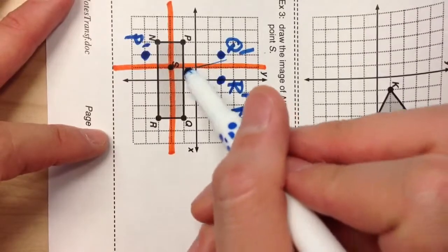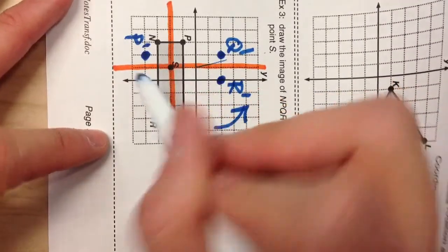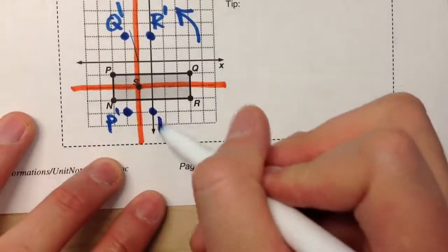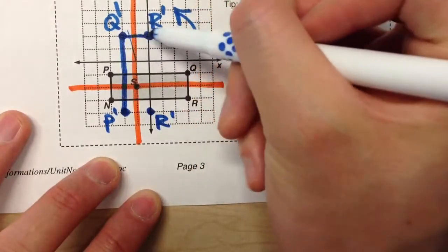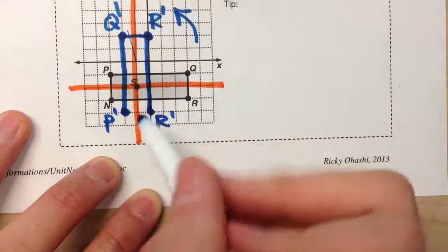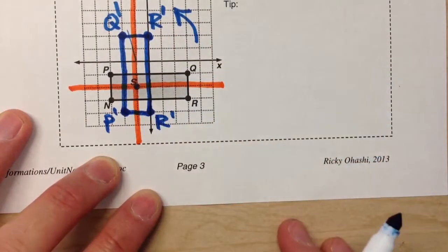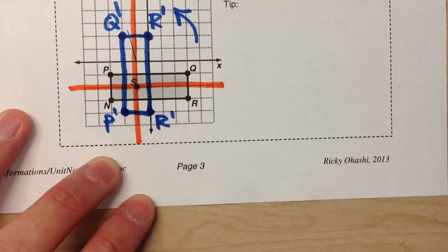And N is two left, one down. Turn my paper. Two left, one down. R'. And there is my new shape, rotated 90 degrees counterclockwise about the point S.